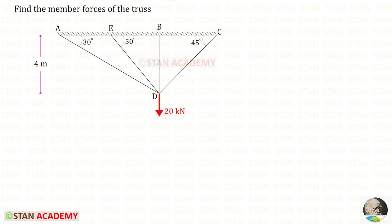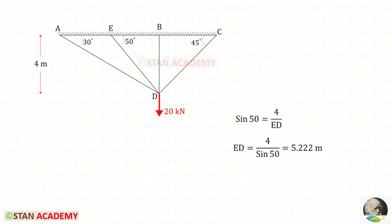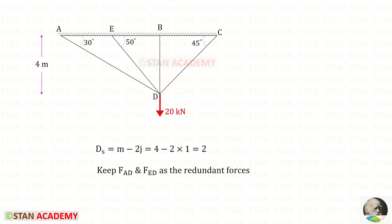Now let us see one more numerical. In this one, there is an additional member ED. We have to find the length of ED. Taking the relevant triangle and using the sin formula: sin 50 equals the opposite side 4 meters upon the hypotenuse ED, giving ED = 5.222 meters. The degree of static indeterminacy: m is now 4 members, so 4 minus 2 times 1 gives 2. Out of the four members, we keep any two as the redundant forces. I am going to keep AD and ED as the redundant forces.